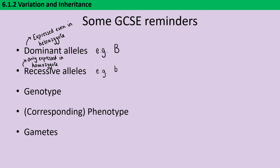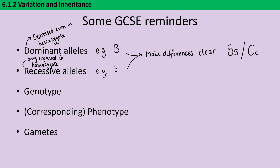It's really important that in your genetic diagrams and Punnett squares your examiner can tell the difference between capital and lowercase letters. The exam board usually picks letters with different capital and lowercase forms, but if you have to use a letter like S or C, it's really important that you emphasize the difference by making your capital really large and your lowercase really small, so your examiner can definitely tell which alleles are present.